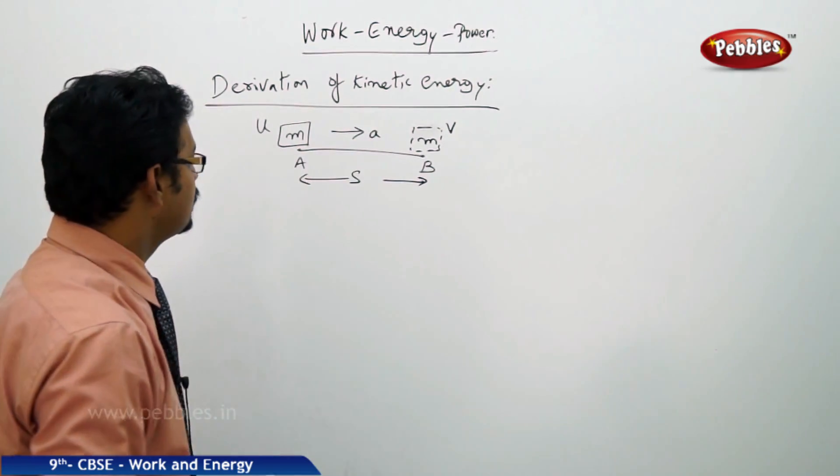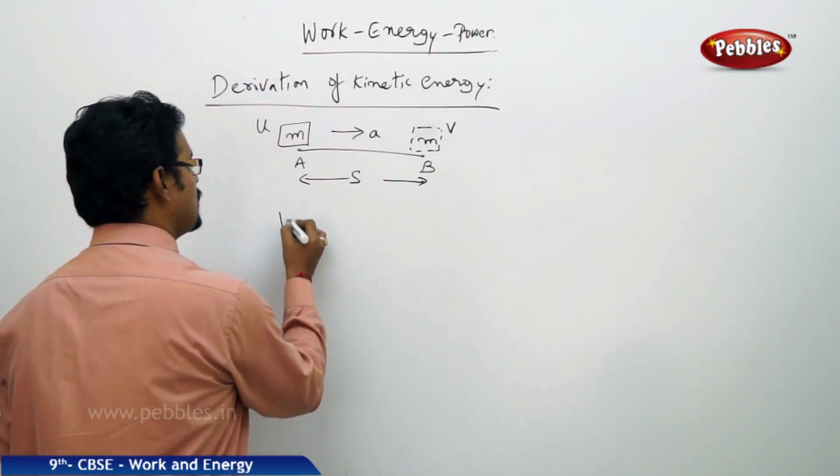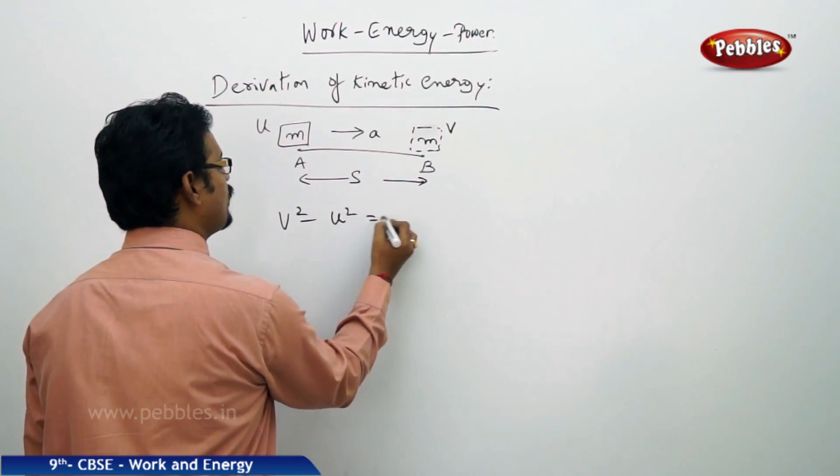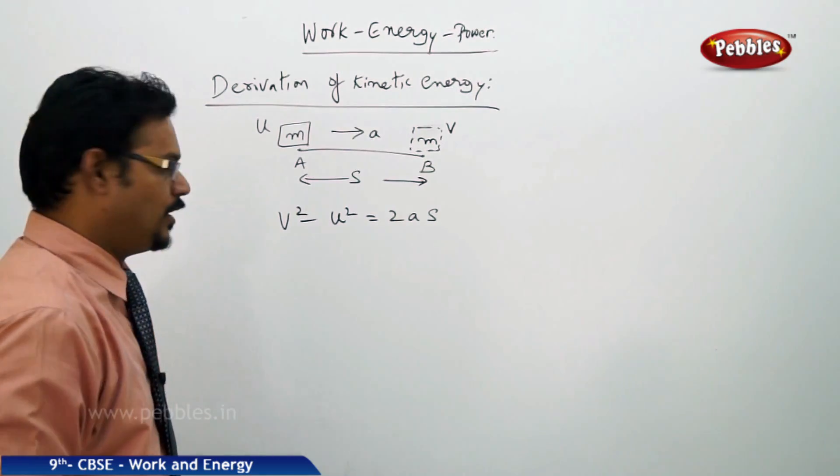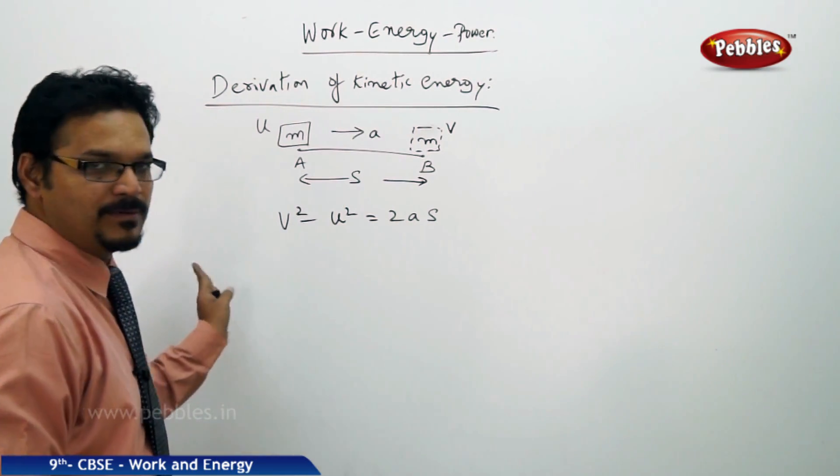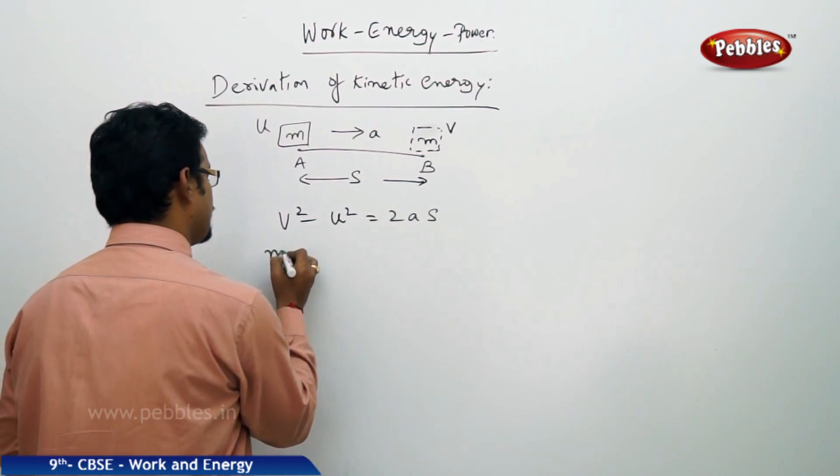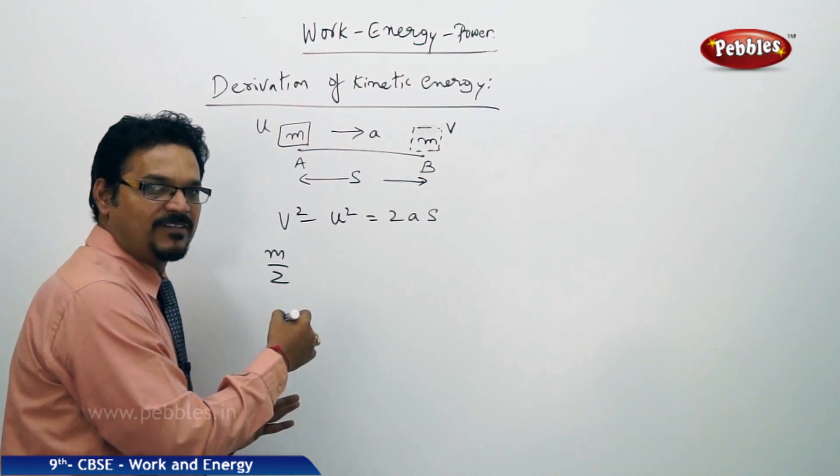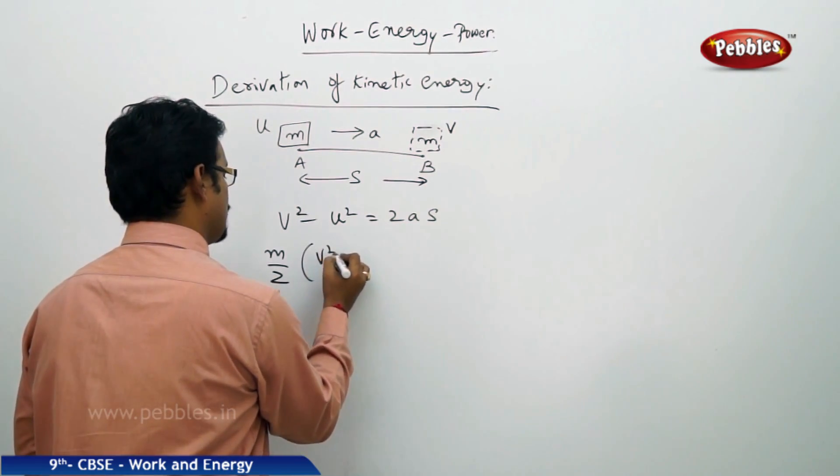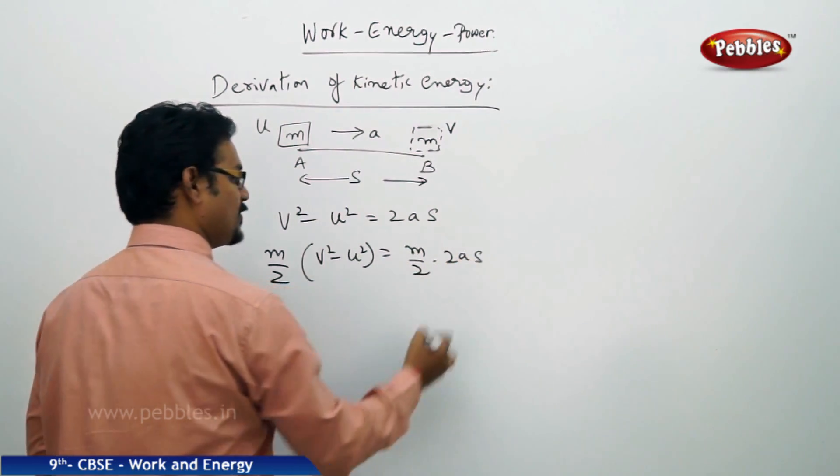If you apply kinematic equations here, the equation you can use is V squared minus U squared equals 2AS. This equation we already know. Now multiply both sides by m divided by 2, so half the mass times V squared minus U squared equals m by 2 into 2AS.